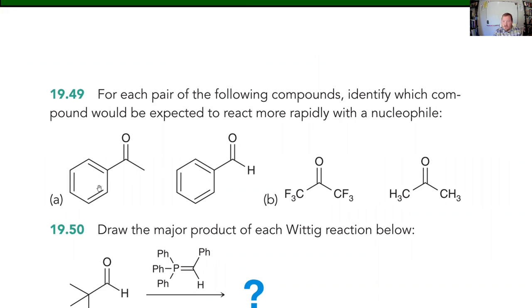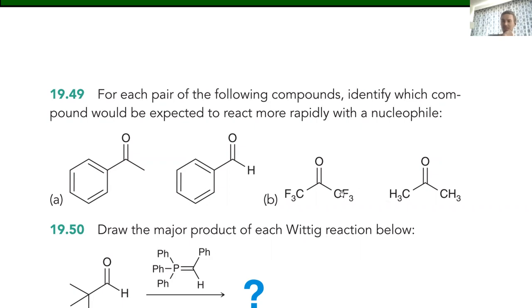All other things being equal, having more electron density on the carbonyl carbon is going to make it less reactive, less attractive to a nucleophile — because nucleophiles are looking for a partial positive. So if we're looking at a ketone versus an aldehyde, the aldehyde is going to be more reactive. How about hexafluoroacetone versus regular acetone — which is going to be more attractive to a nucleophile? The fluorine one, because fluorine is pulling the electron density away from the carbonyl carbon.